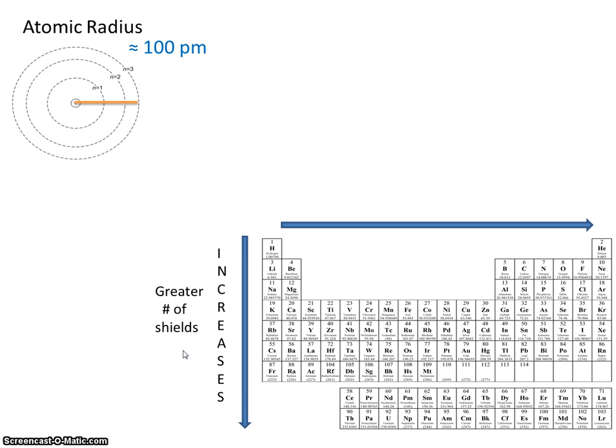As we go left to right across a period, what do you think might happen to the atomic radius? Well, you know that as we go left to right across a period, that the number of shields stays the same.